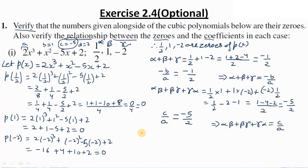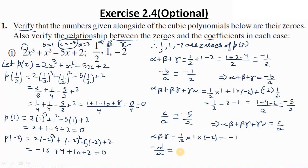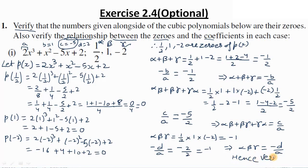For the third relation — product of zeros: alpha × beta × gamma = (1/2) × 1 × (-2) = -1. And -d/a = -(2)/2 = -1. Therefore alpha·beta·gamma = -d/a. All three relations are verified. Hence verified.